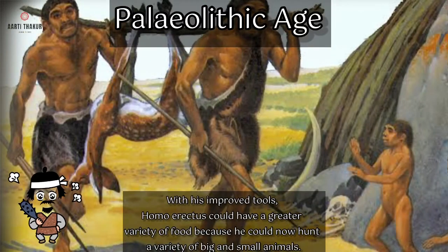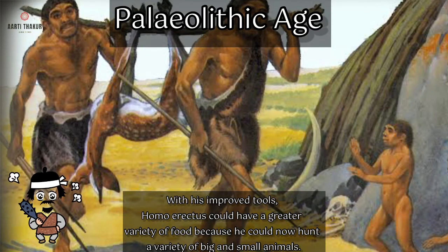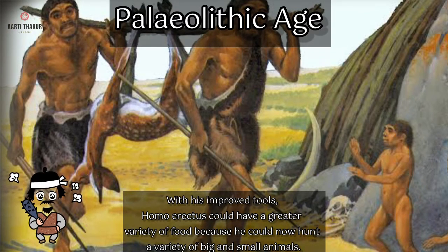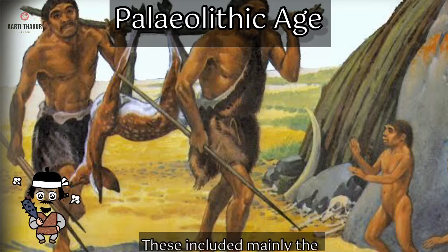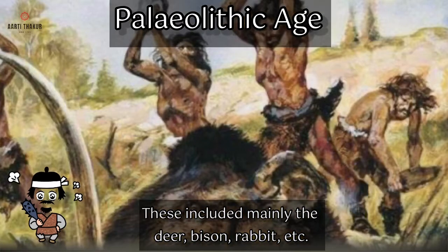It means that Homo erectus was using different tools for different tasks according to the demand of the task. With his improved tools, Homo erectus could have a greater variety of food because he could now hunt a variety of big and small animals. These included mainly the deer, bison, rabbit, etc.